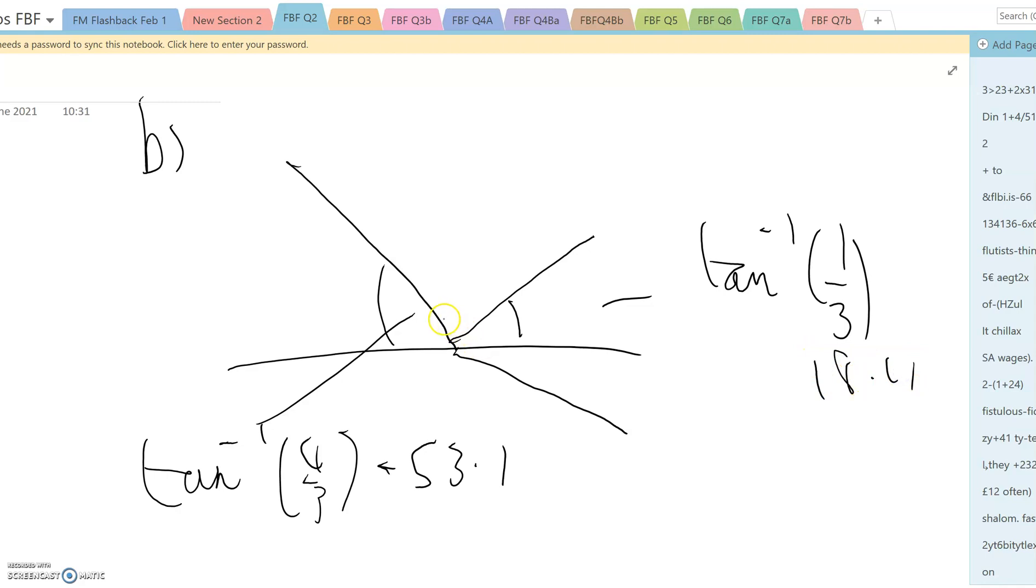The angle of deflection is therefore going to be this angle here, and because these are the same it's just a matter of adding the two. 53.1 plus 18.4 comes to 71.5.